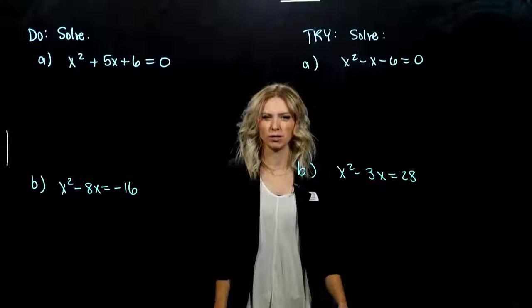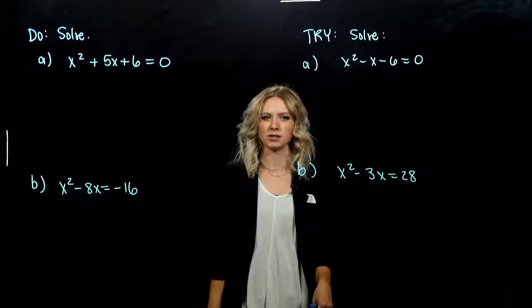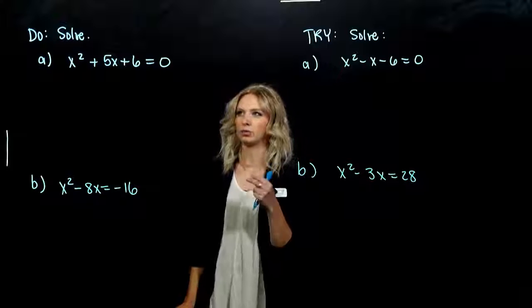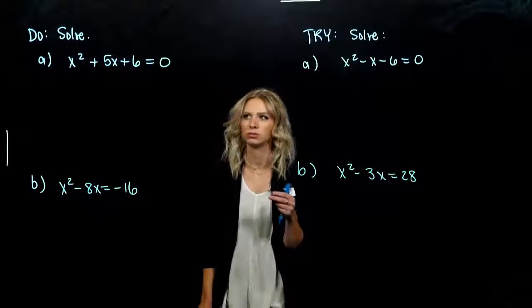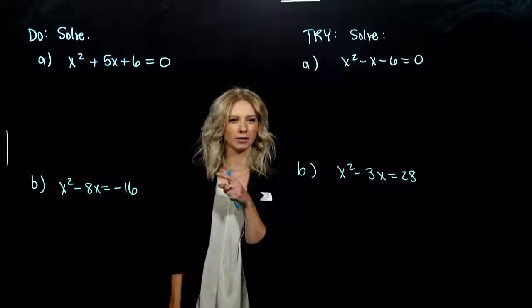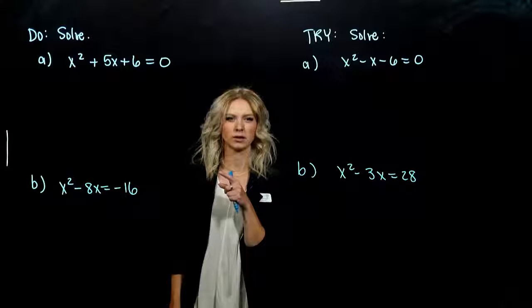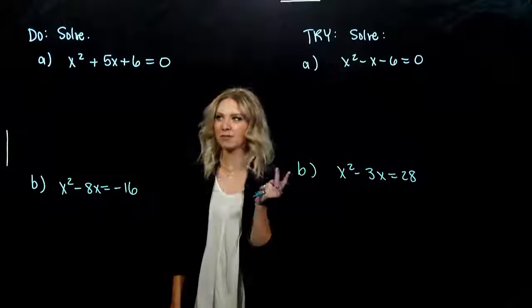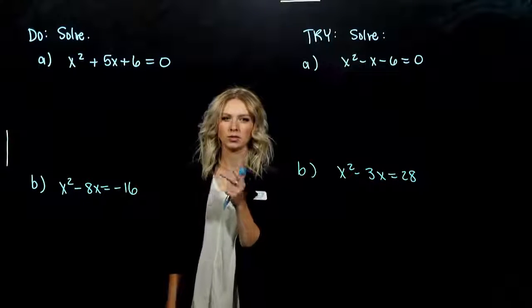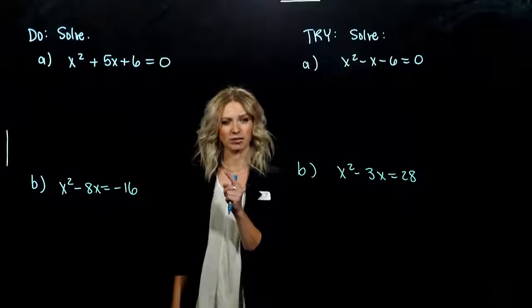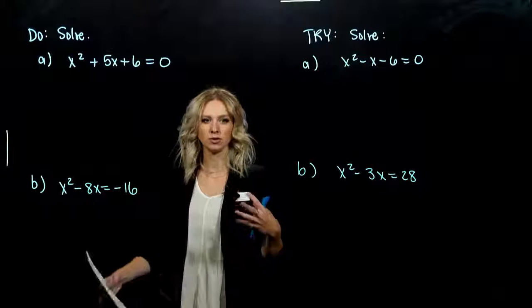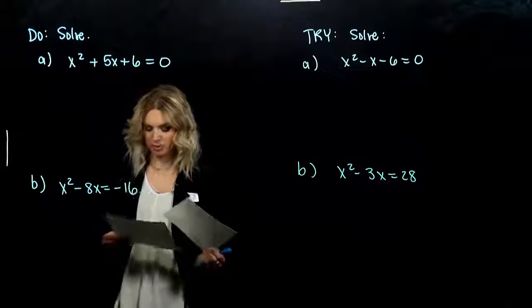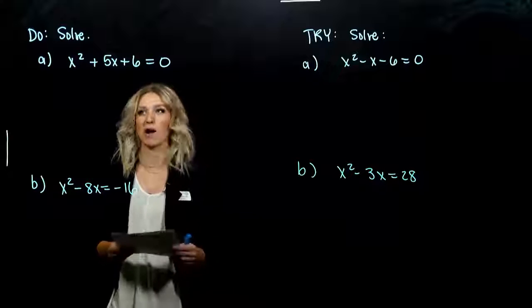Looking at these more difficult cases, if we want to use the product rule, we have to have products involved. Right now we don't have two quantities being multiplied — we've got a big long trinomial. So we can factor that into products, then use the principle of zero products.